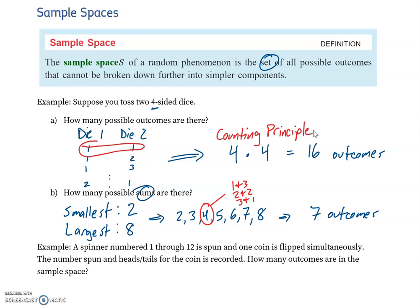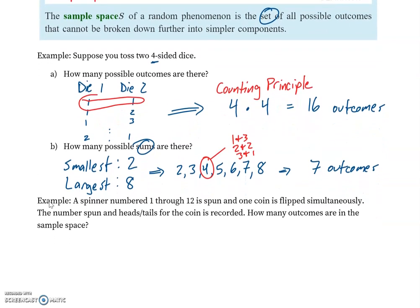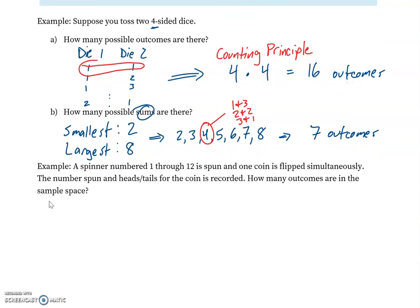Okay, so again, that's for multi-stage processes. Alright, now our second example here says we have a spinner numbered one through 12, and then we have a coin that's going to be flipped simultaneously. So this sounds like a multi-stage event to me. Stage one: spin. Stage two: flip. They're happening simultaneously, sure, but they're sort of separate events. They're not having any outcome or any effect on each other's outcomes.